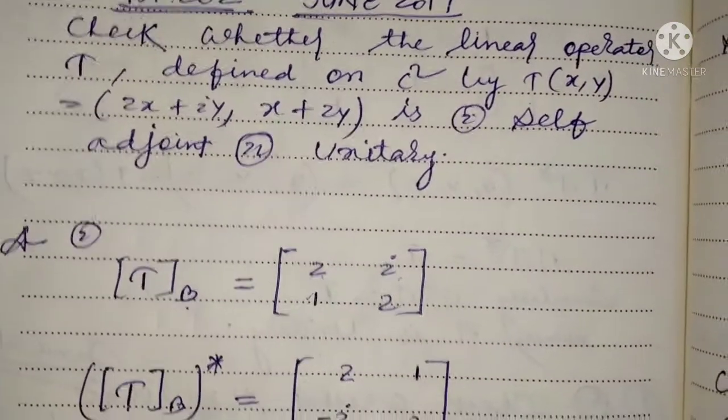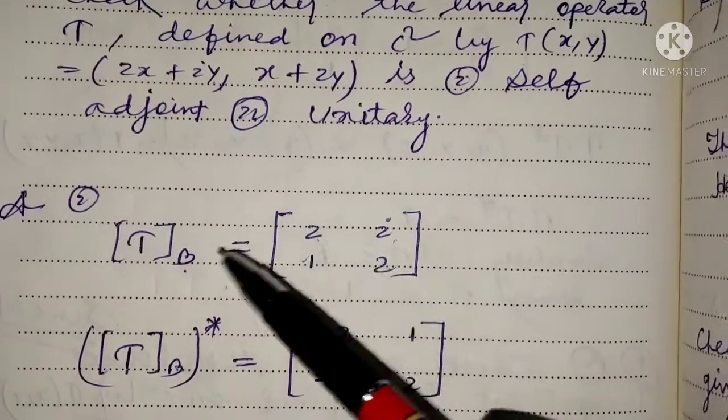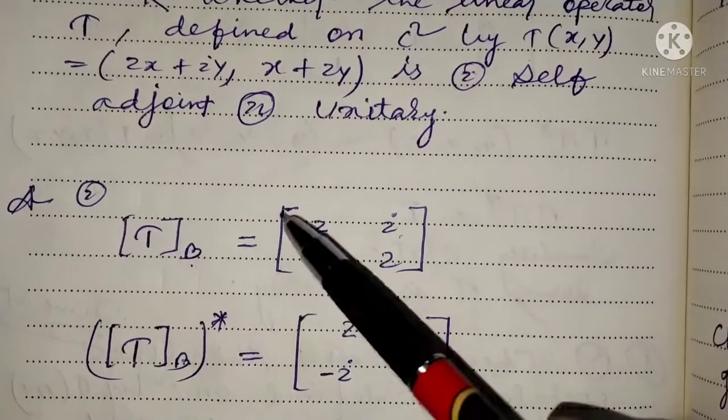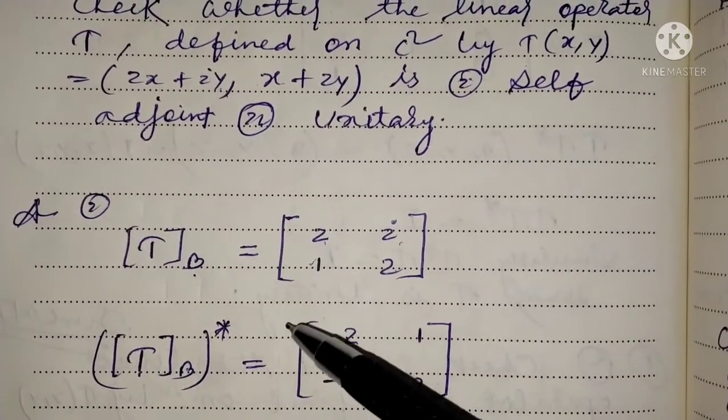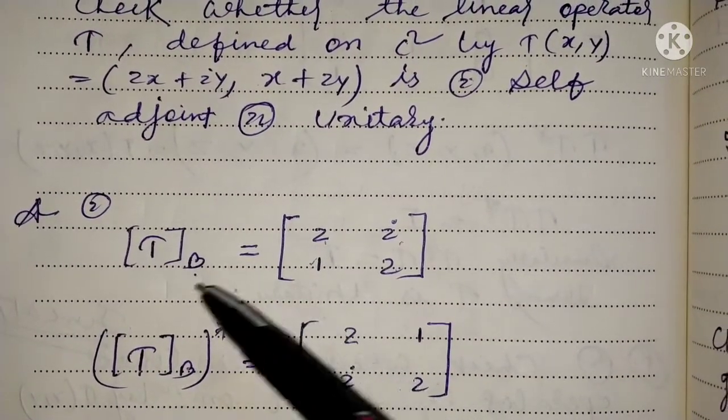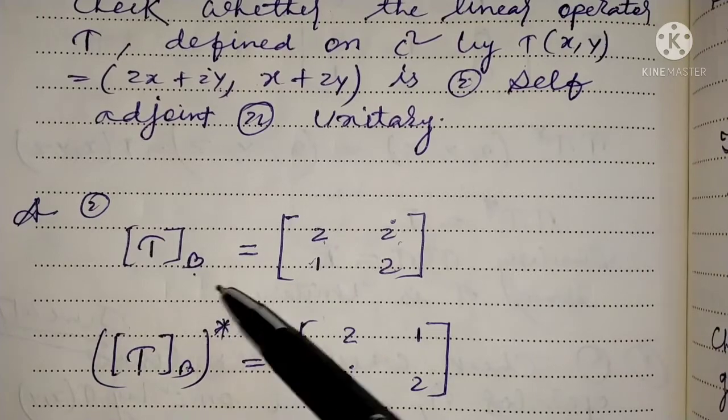First of all, we have to take the matrix and find the matrix of T with respect to the basis.